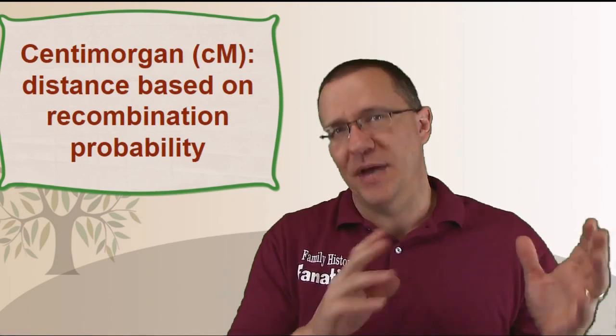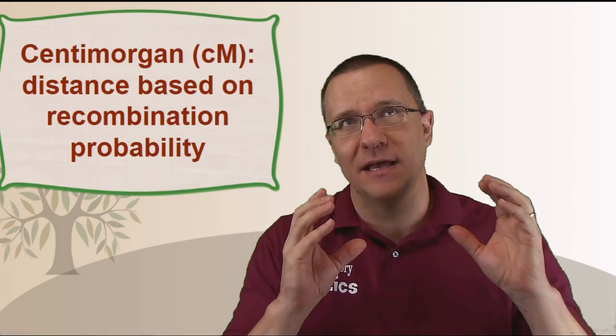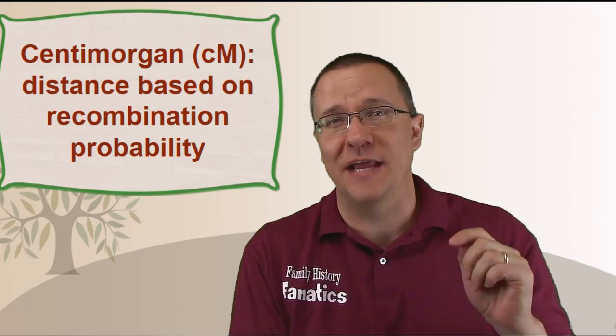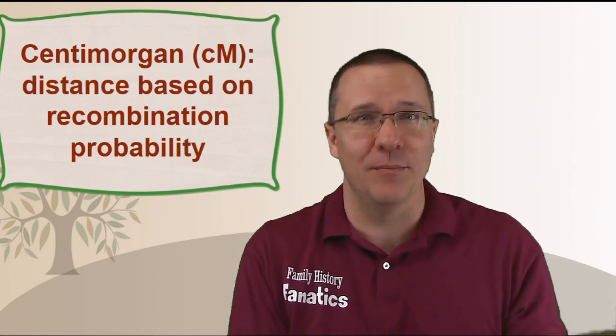Now the next way that we measure DNA is by centimorgans or cM. Now centimorgans is a lot more difficult to understand because it's not a simple location. What a centimorgan is, is it's actually based on a probability of recombination. Now that may sound really confusing and for the most part it is because it's unlike anything else that we actually measure in most the rest of the scientific world.